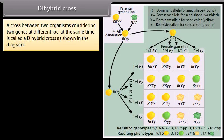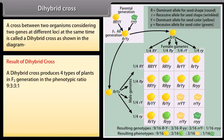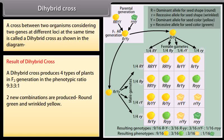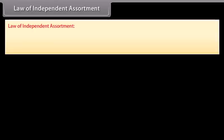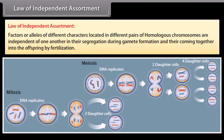Dihybrid cross. A cross between two organisms considering two genes at different loci at the same time is called a dihybrid cross. A dihybrid cross produces four types of plants in the F2 generation in the phenotypic ratio 9:3:3:1. Two new combinations are produced: round green and wrinkled yellow. The inheritance of one character was independent of the inheritance of the other character — this is the Law of Independent Assortment. Factors or alleles of different characters located in different pairs of homologous chromosomes are independent of one another in their segregation during gamete formation and in their coming together in the offspring by fertilization.